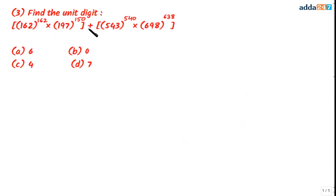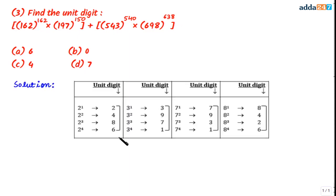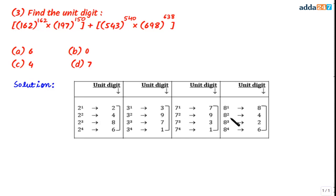Let's take question number three. Here we have to evaluate this expression. The trick we'll use involves a cyclicity chart. Look at this chart carefully: if a number has unit digit 2 and is raised to powers 1, 2, 3, or 4, the units digits in the answers are 2, 4, 8, 6 respectively. Similarly for unit digit 3, the units digits cycle as 3, 9, 7, 1; and we have similar information for unit digits 7 and 8.